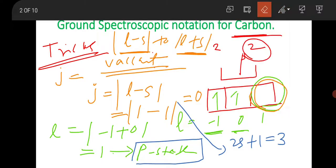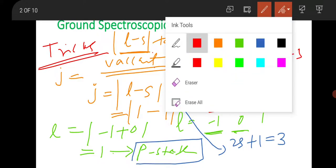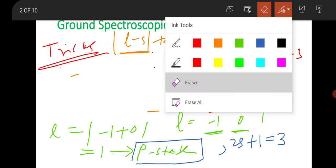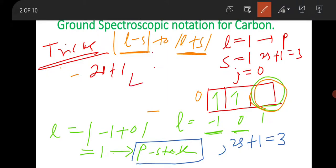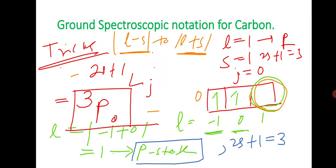So finally we have: L = 1 (P state), S = 1 so 2S+1 = 3, and J = 0. The term symbol in atomic molecular physics is given by ²ˢ⁺¹L_J. So it will be 2S+1 = 3, L means P state, and J = 0. The ground state spectroscopic notation will be ³P₀. This is very, very important — maximum time this question is asked for 2 marks in GATE exam and for 5 marks in GRE.